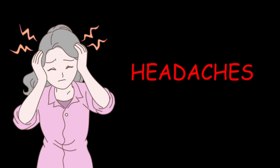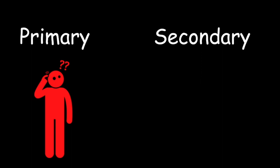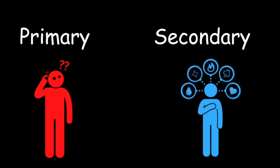There are two main types of headaches: primary headaches and secondary headaches. A primary headache is one that is not caused by another underlying condition. However, a secondary headache is caused by another underlying condition, such as trauma or a space-occupying lesion.